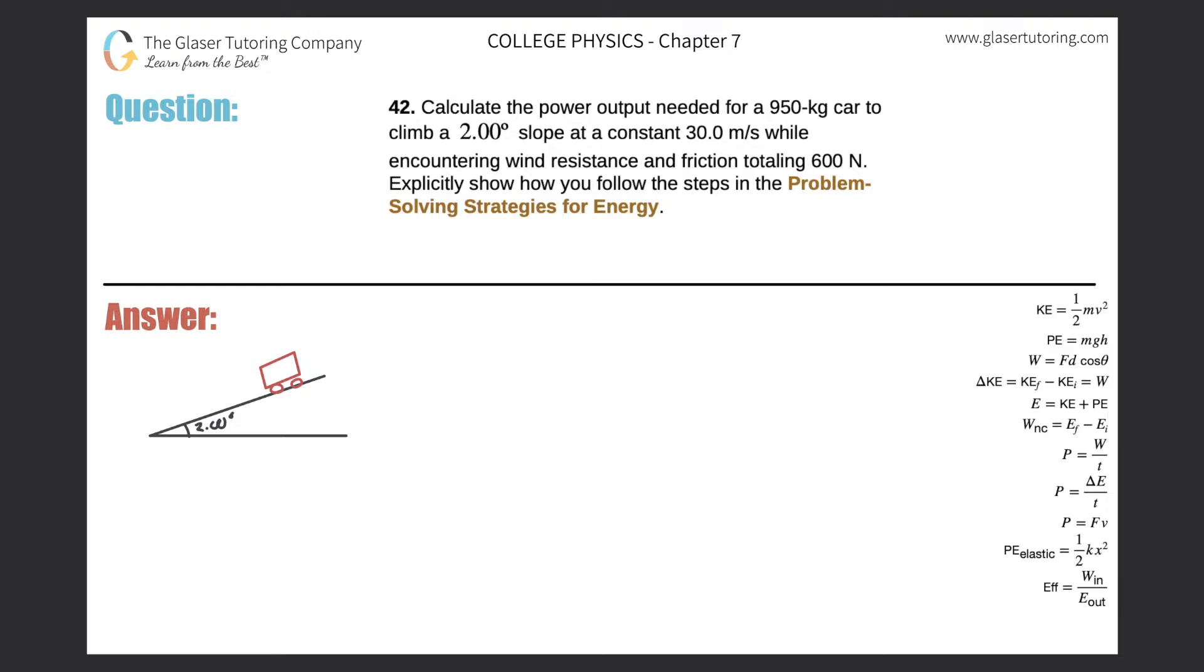Number 42, calculate the power output needed for a 950 kilogram car to climb a 2 degree slope at a constant 30 meters per second while encountering wind resistance and friction totaling 600 newtons.